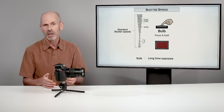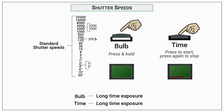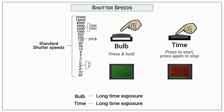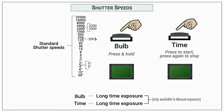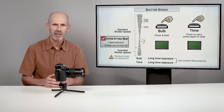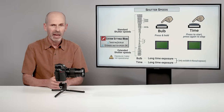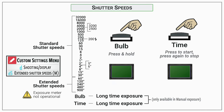Bulb lets you control exactly when you start and end the exposure. There's also a 'time' option where you press once to start and press again to end — so you don't have to hold the button down, which can cause camera shake. Nikon also has extended shutter speeds, which is fantastic for nighttime exposures. I've always wondered why cameras limit us to 30 seconds, and Nikon addresses that — though you do need to enable it in the custom settings menu.